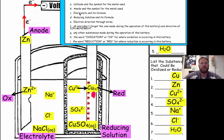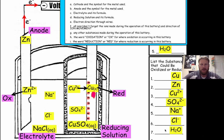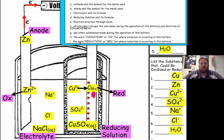Our diagram is coming along nicely. We've labeled the cathode and anode, the electrolyte and the reducing solution, the direction of electron flow, and all the ions in our diagram. We've also listed all substances made during the operation of this battery. We don't have to put water separately because the water is represented by the solution line showing we have a solution in the beaker and the cup. We have oxidation and reduction labeled.